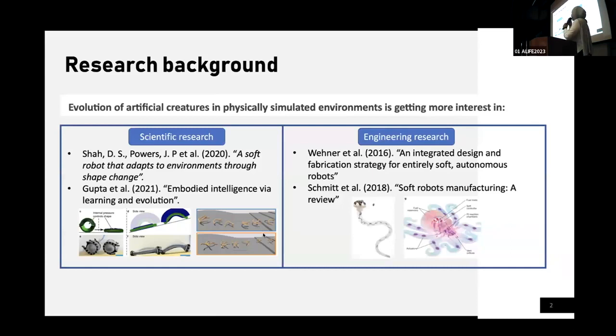I would like to start my presentation by briefing about some of the backgrounds of our research. As we know, the approach to evolve artificial creatures is known to have a lot of interest in both scientific and engineering research. In scientific research, such as the study of evolution and development of artificial creatures, while in engineering-related research, they are more interested to show the purpose in robotics and manufacturing.